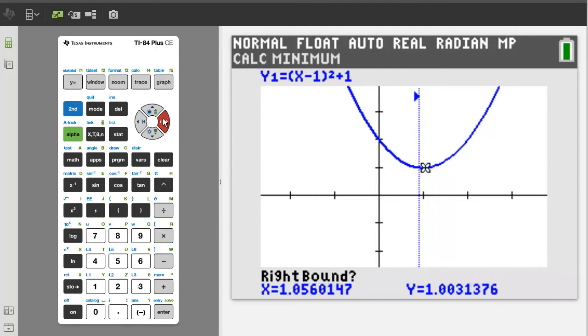Now press the enter button. Now it is asking for the right bound. Move the cursor just to the right where we think the minimum is. Ok, right there. Now press enter.